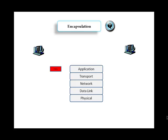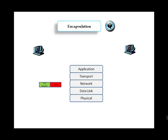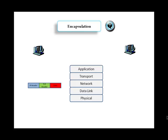Data is passed through the Internet Protocol stack from the application layer down to the transport layer, where a transportation mode is chosen — either TCP or UDP — and a header (the TCP or UDP header) is attached. The data is then sent down to the network layer, where an IP header is attached to the segment, and it becomes what is called a packet.